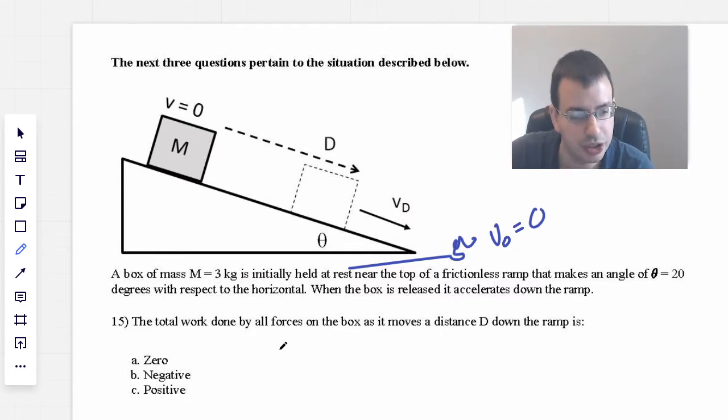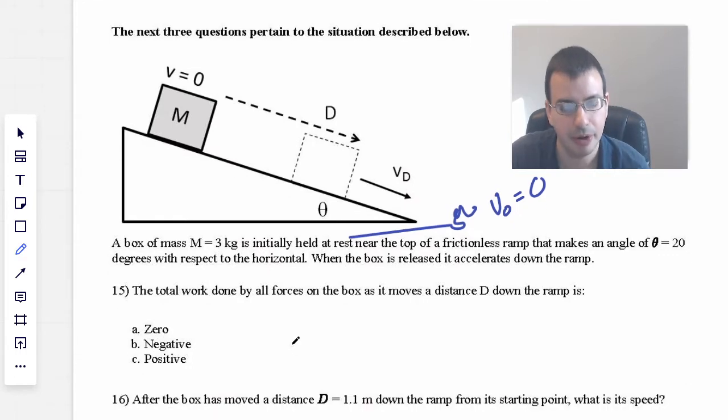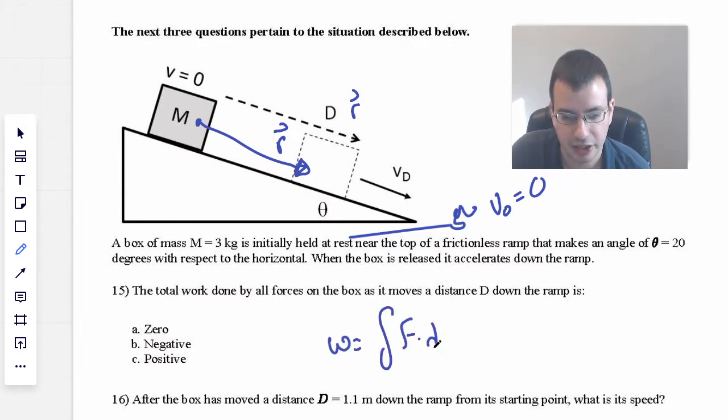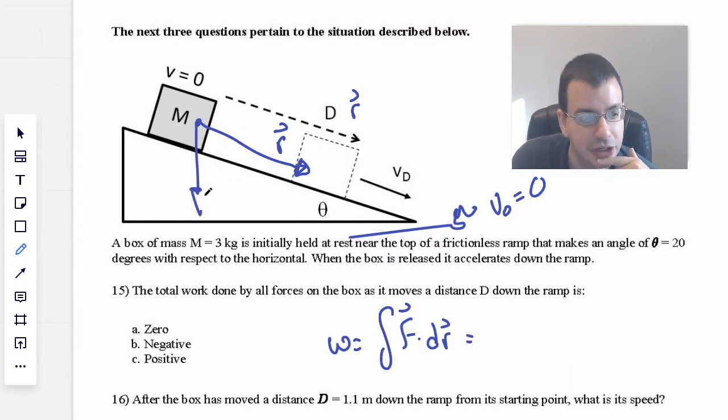The total work done by all forces on the box as it moves a distance d down the ramp is... Okay, so we got motion here. I'm going to refer to this as R, so we're going to have an R vector, meaning direction going that direction. The definition of work is F dot dr. These are both vectors.